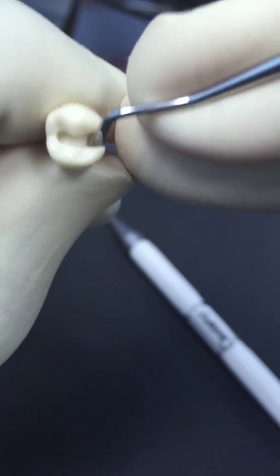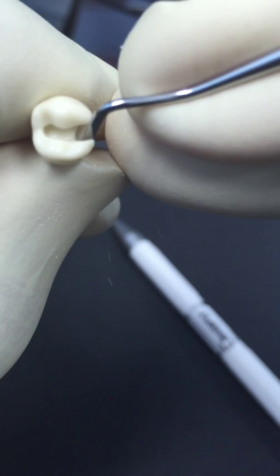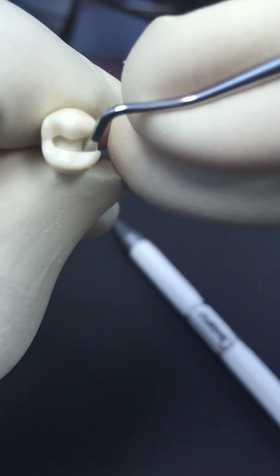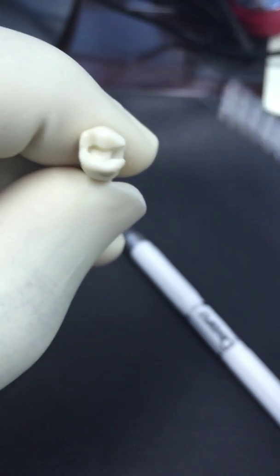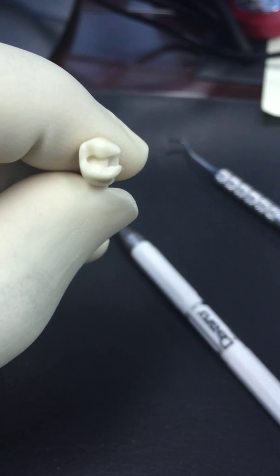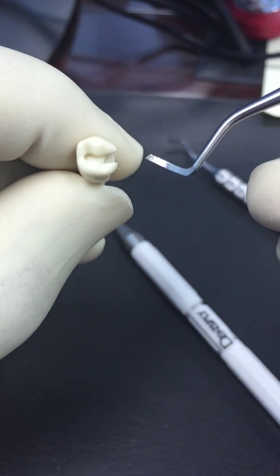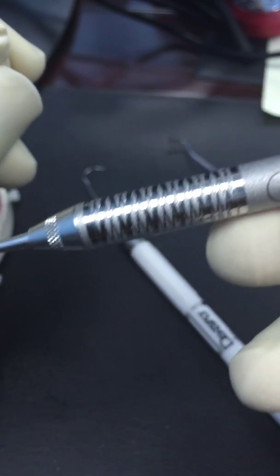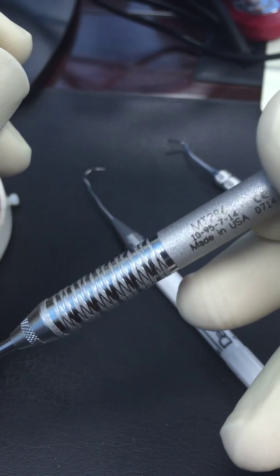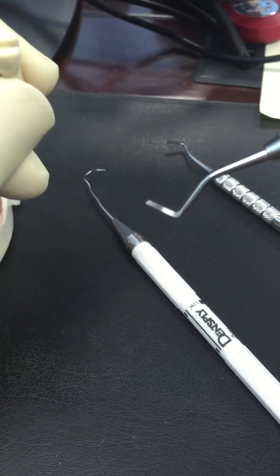Also be parallel to the wall that you are cutting through. The other hand instrument that we usually use is the gingival marginal trimmer.